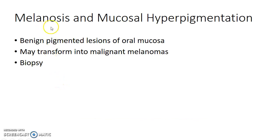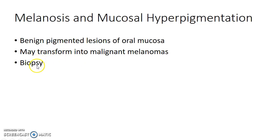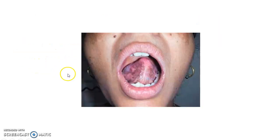Now coming to melanosis and mucosal hyperpigmentation. It is a benign pigmented lesion of the oral mucosa that may transform into malignant melanomas. Biopsy should be done to rule out malignant melanomas. This is how a patient with melanosis or mucosal hyperpigmentation presents to you.